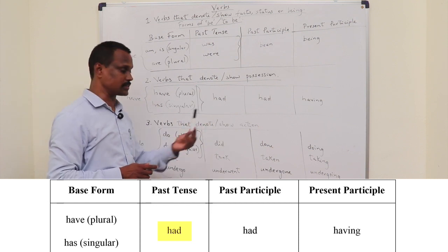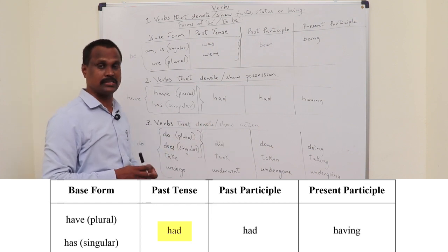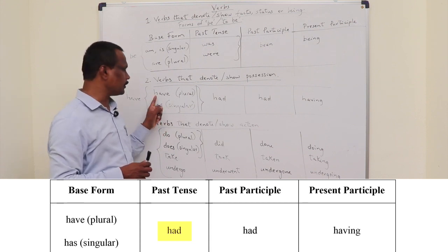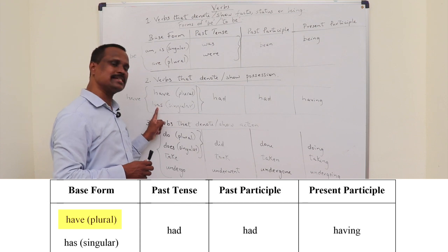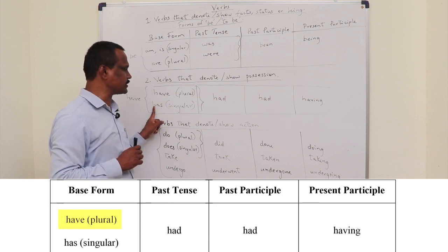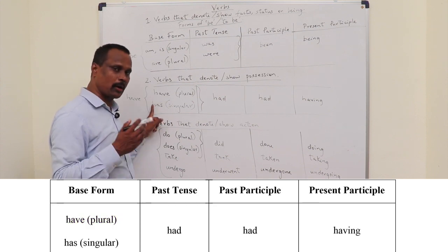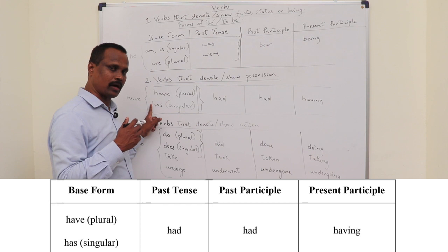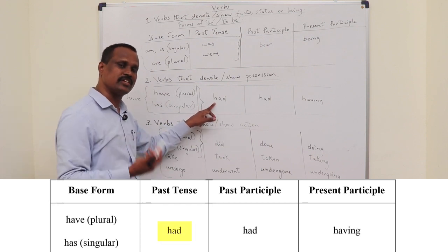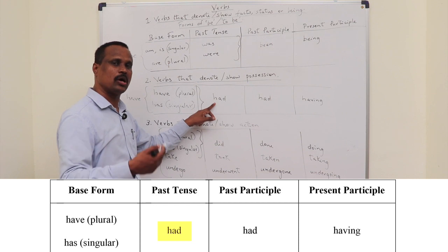When we are talking about something that we had before, we say, for example, I had a pen means in the past. Like giving an example in the OET context, the patient has severe cough or pain or headache. It's about the present situation. Whereas if you're talking about a situation of the past, we say the patient had a severe cough or pain or headache.